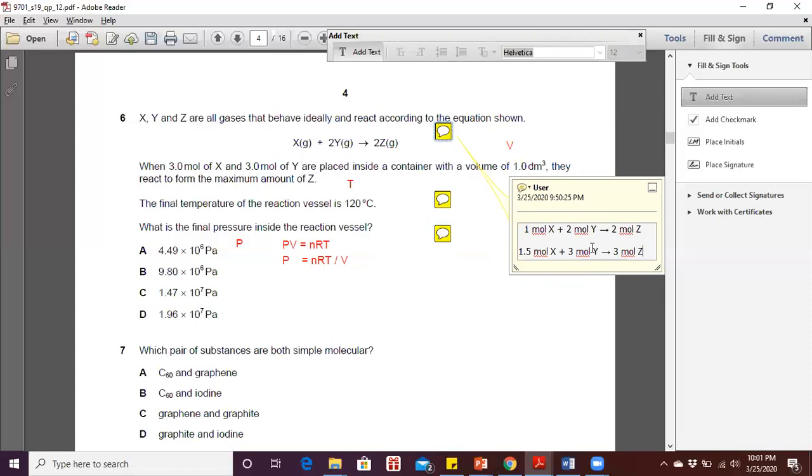So from here, if let's say maximum, we are going to use up a total of three moles. Based on this ratio, three moles of Y would only react to half, which is 1.5 mole of X, because the ratio is 1 to 2 between X and Y. And they will produce a maximum of three moles of Z.